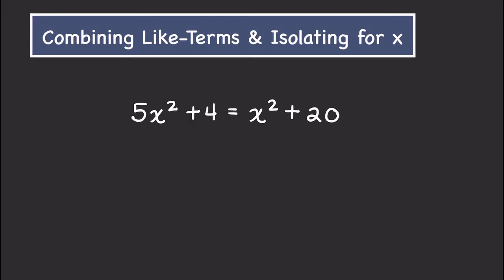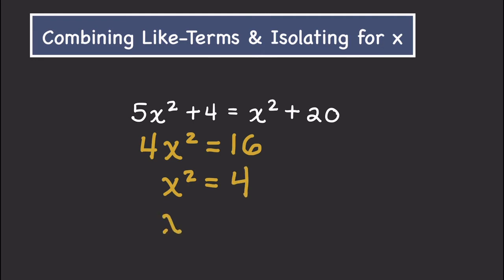To begin, let's talk about how we would normally solve for a variable in algebra. Take this equation: 5x² + 4 = x² + 20. Normally we're going to combine like terms and then isolate for x. We get 4x² = 16, divide both sides by 4, and then take the square root. When we take a square root, we want to include the positive and the negative possibilities.